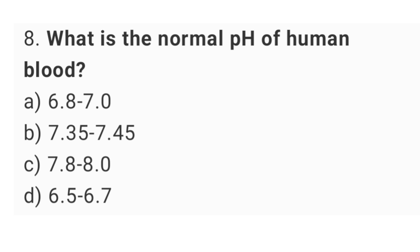Question number 8: What is the normal pH of human blood? The right answer is option B: 7.35 to 7.45.